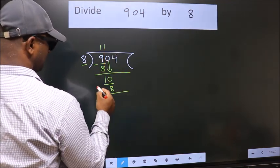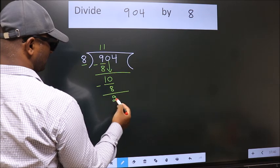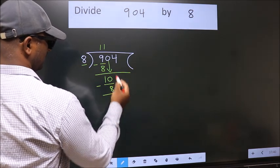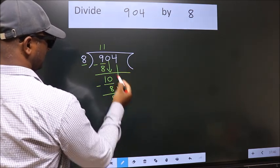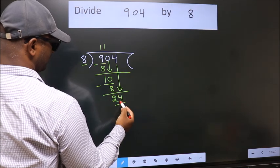Now we subtract. We get 2. After this, bring down the beside number. So 4 down. So 24.